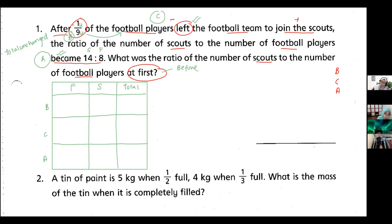After one-ninth of the football players left, the football players go minus one unit, scouts go plus one unit. So football players before is nine units. After: the scouts become 14 units, and the football players become eight units. Check the column — nine minus one equals eight. Correct.